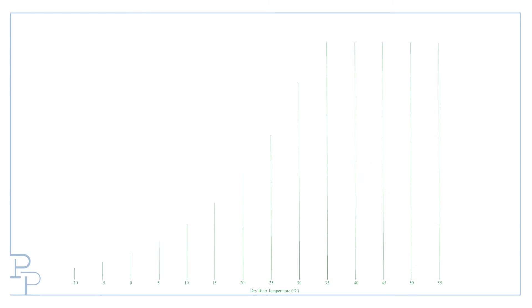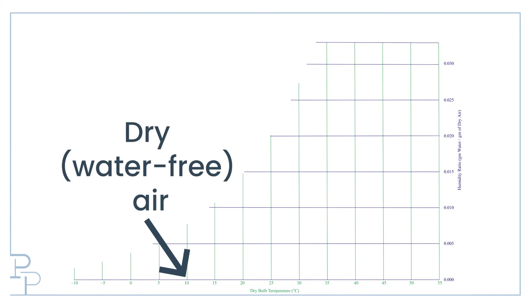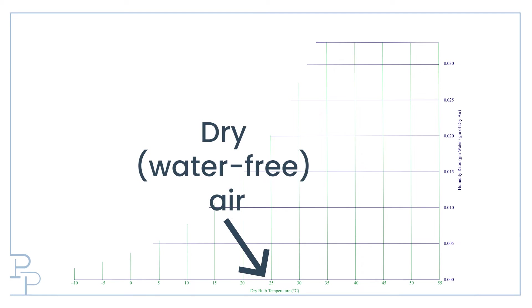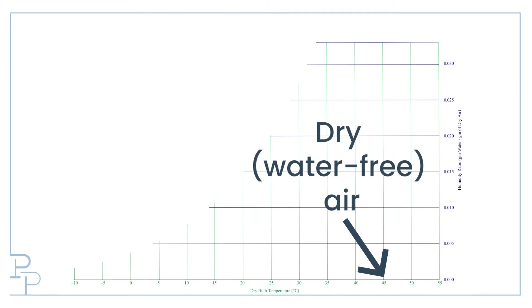On the X axis we have Dry Bulb Temperature — this is simply regular temperature the way you have always understood it, nothing special here. On the Y axis we have Absolute Humidity: how many grams of water does each kilogram of dry air contain? Totally dry air lies along the X axis at 0 grams of water per kilogram of dry air.